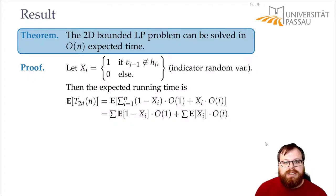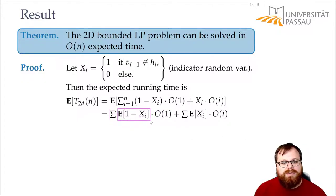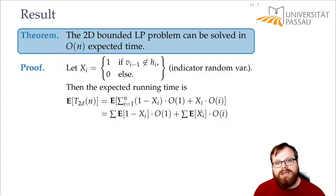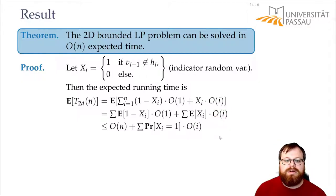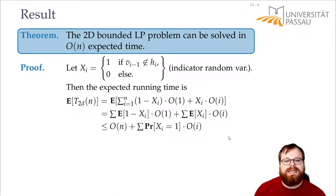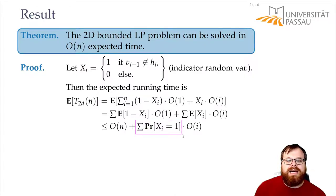This is very easy to estimate. In the worst case the first term is always 1, so we sum up n times O(1), meaning this whole part is only O(n). For the second part, this is O(i) times the probability that xi is 1. So we get at most O(n) plus the sum of the probability that xi is 1 times O(i). What we have to figure out is: what is the probability that xi is 1?